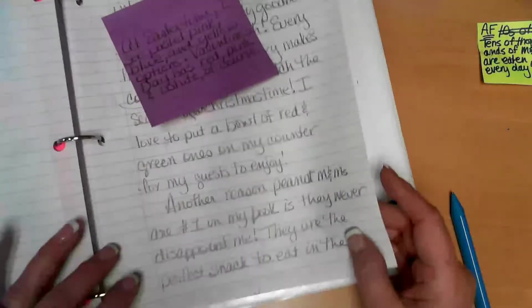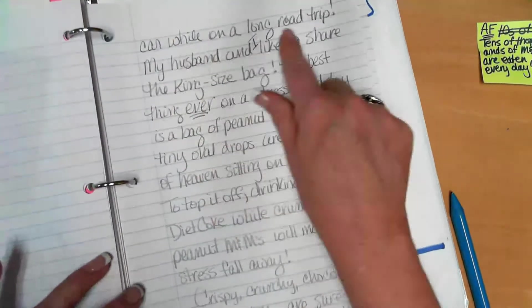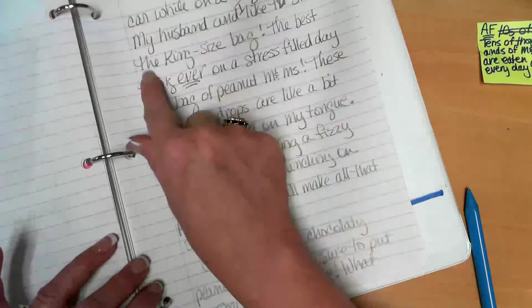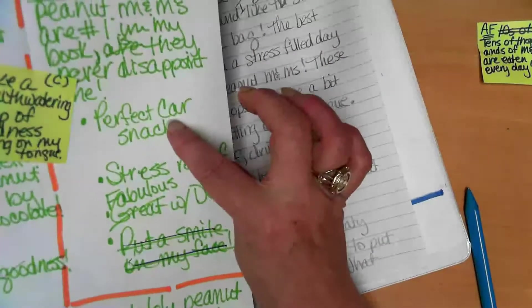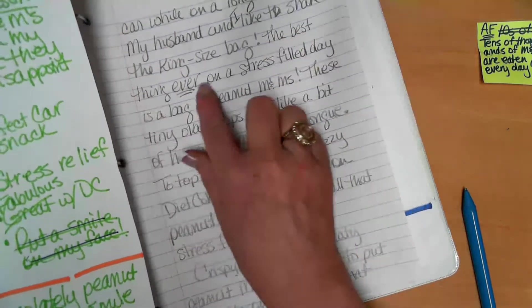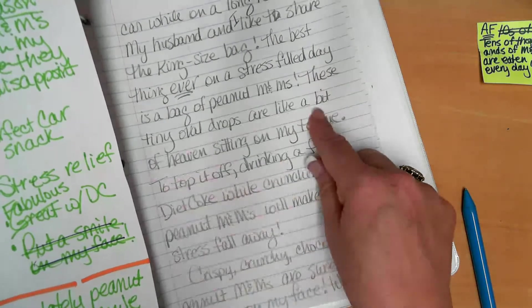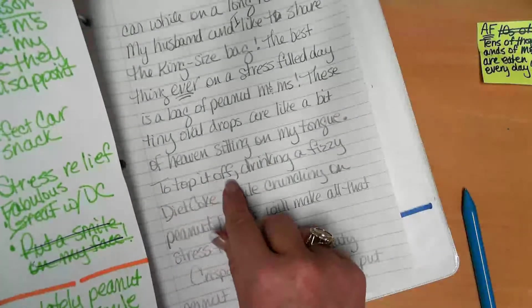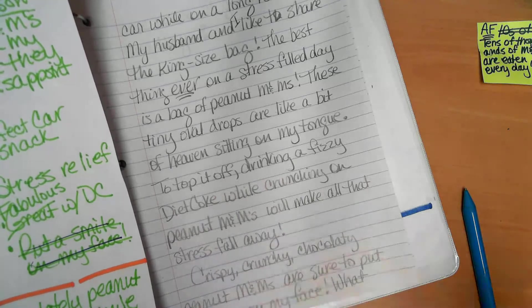But we're writing long and strong. And if you'll notice, everything I had, all these bullets, I wrote long and strong about it. That's my idea. And then I wrote about it. Let's look over here at Perfect in the Car. They are the perfect snack to eat in the car, I added, while on a long road trip. Then I also added, my husband and I like to share the king-size bag. So I didn't just put Perfect in the car. I stretched it out.